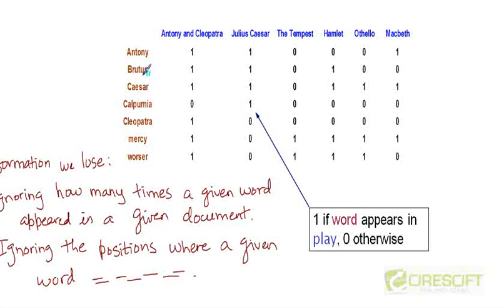So we are not keeping track of how many times Brutus appeared in the play Antony and Cleopatra. All we care about is that this word is present in this document. So we are losing this information, this count of how many times Brutus appeared in this play and so on.